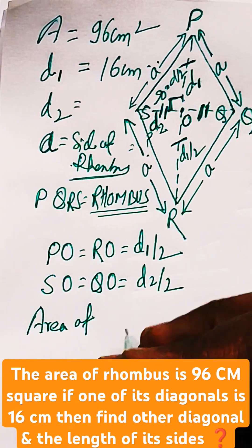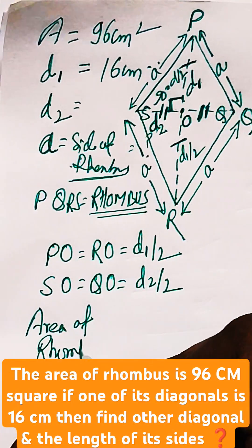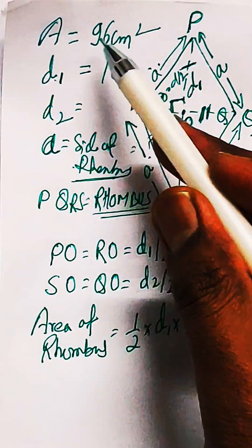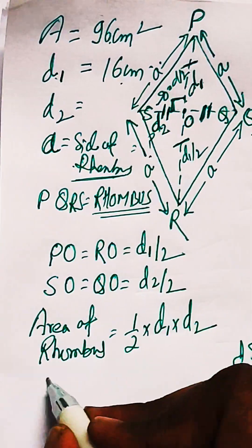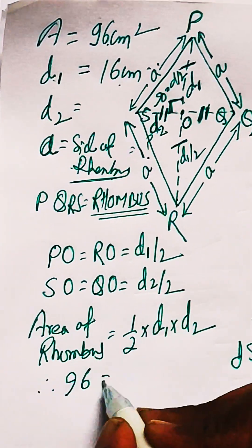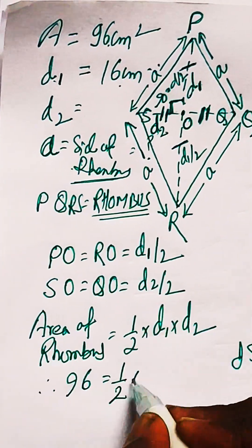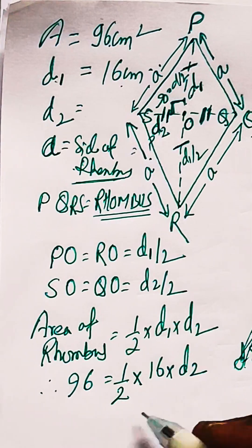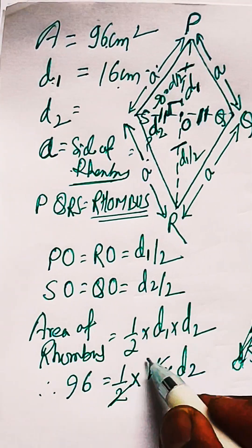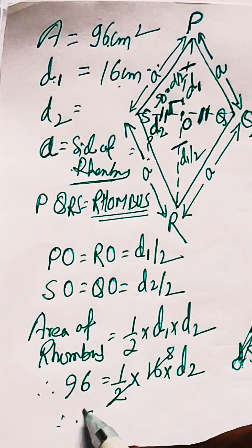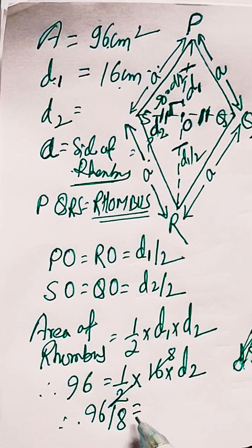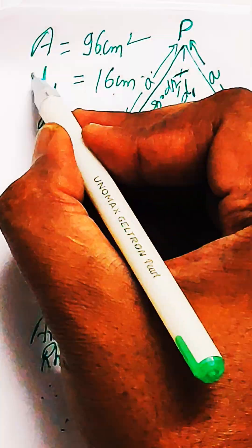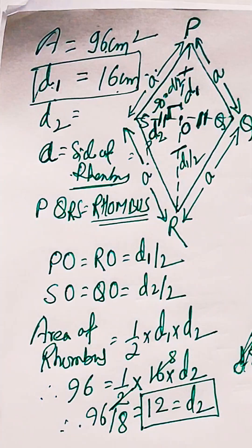Now, area of a rhombus equals half into d1 into d2. Since d1 = 16 and area = 96, therefore 96 = (1/2) × 16 × d2. Solving: 96/8 = 12, so the length of d2 is 12 cm.